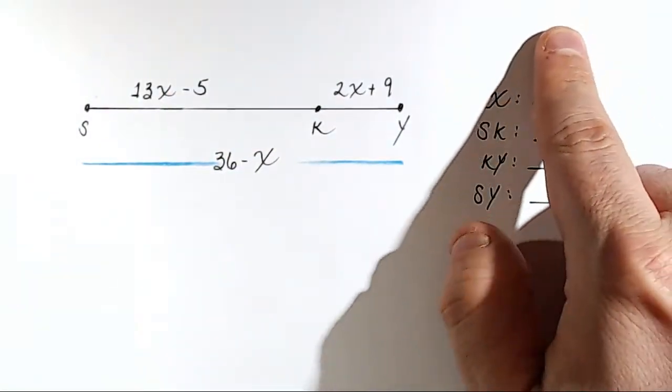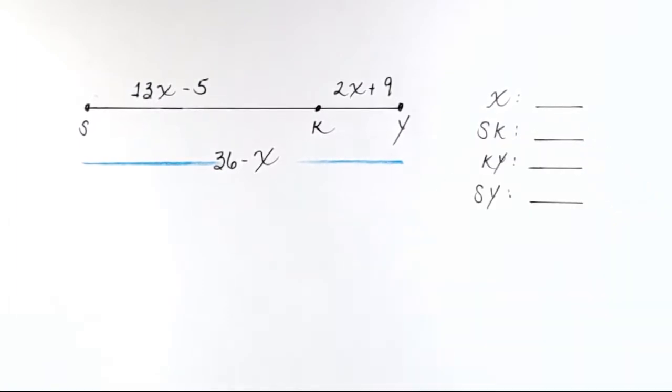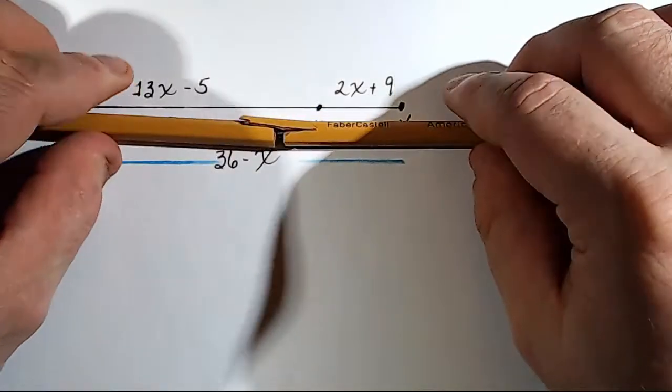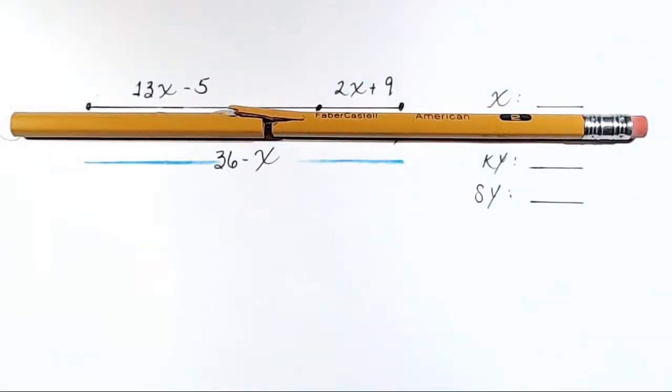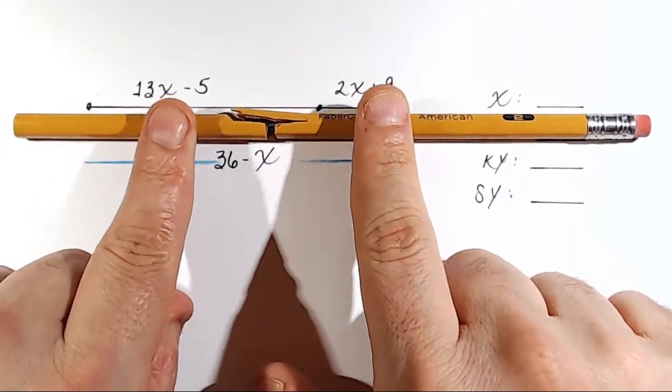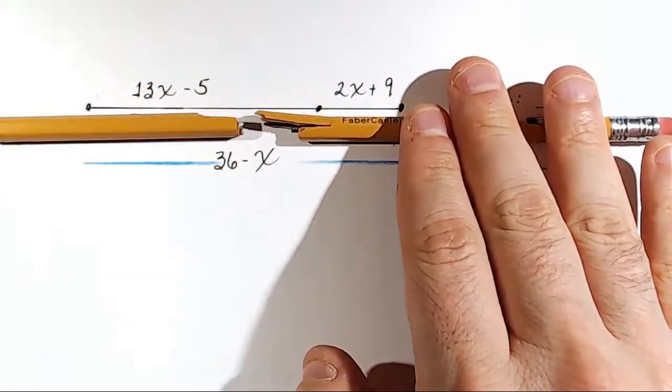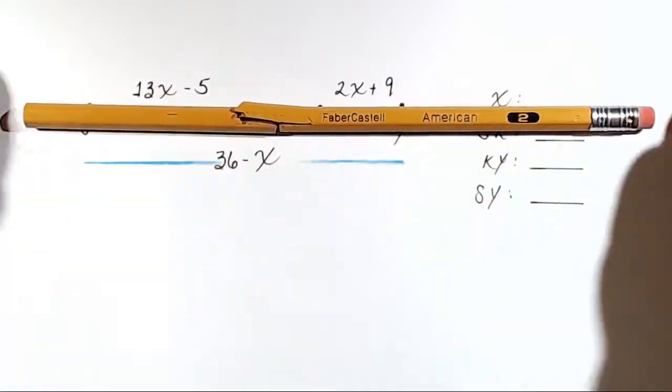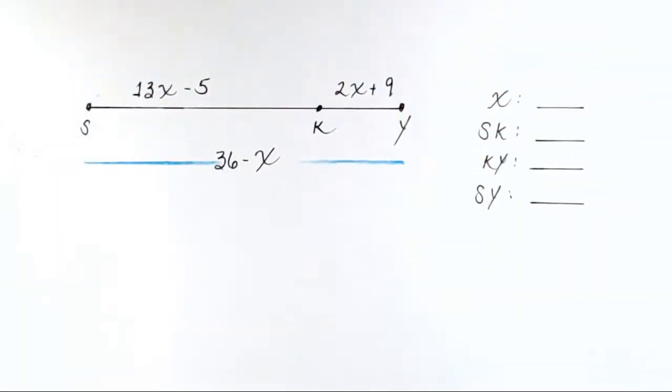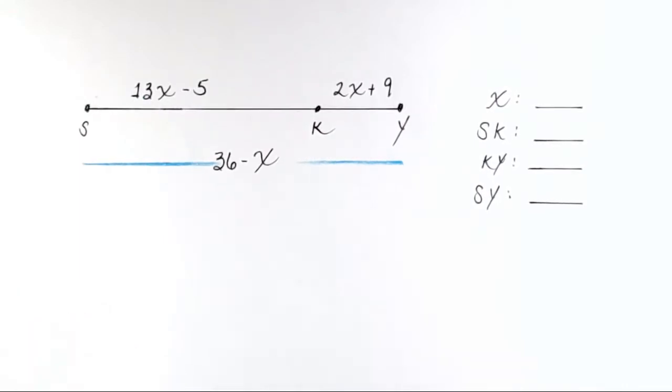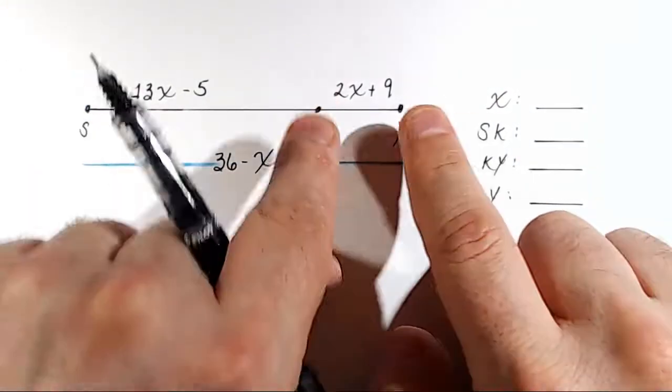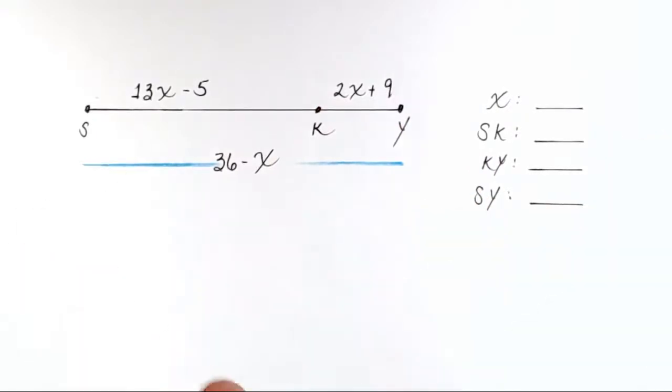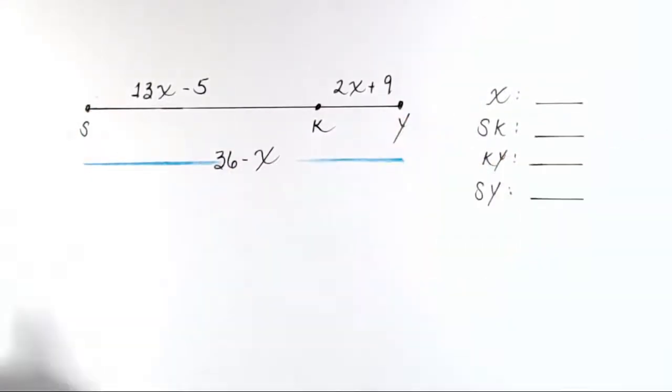Let's start with the first one. Let's find X. Now, remember, what does the segment addition postulate say? Back to the broken pencil - it sacrificed itself for your education. If you have a total pencil, you can find the total length by finding the length of one piece and adding it to the length of the other piece. They come together to form the total length. That's the segment addition postulate.